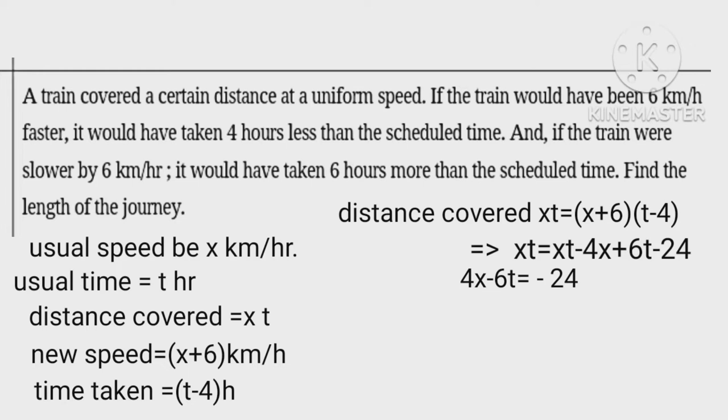Similarly, when speed is reduced by 6 kilometers per hour and time taken is increased by 6 hours, distance covered xt equals (x minus 6)(t plus 6).